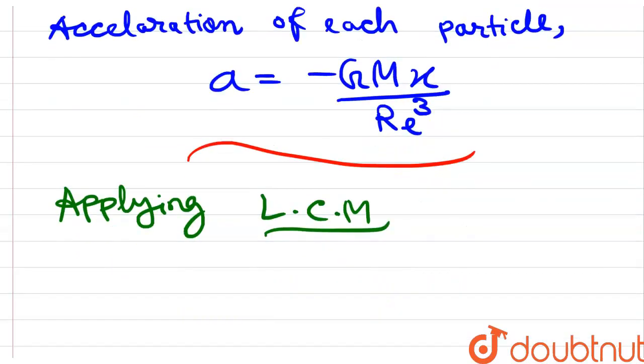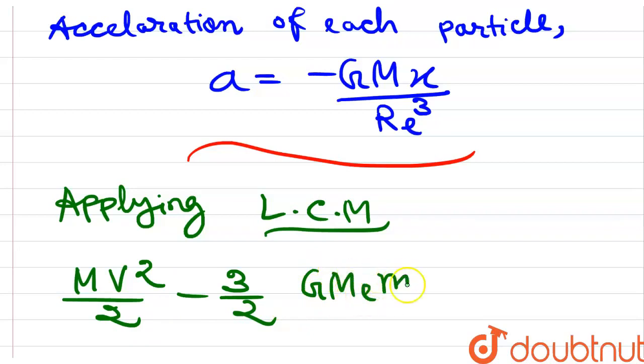Conservation of mass, you have to use m v squared by 2 minus 3 by 2 GMₑ mass of particles divided by radius of earth is equal to minus GMₑ